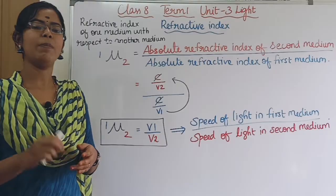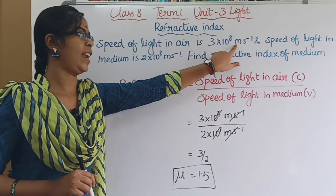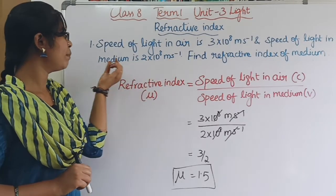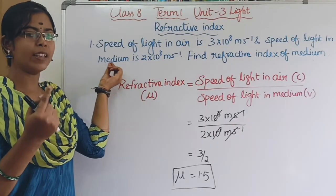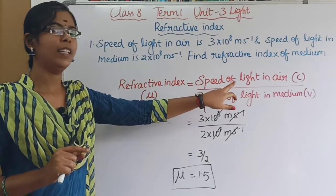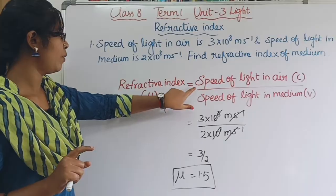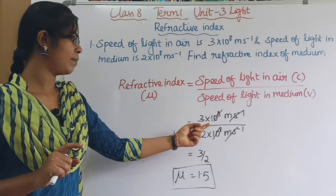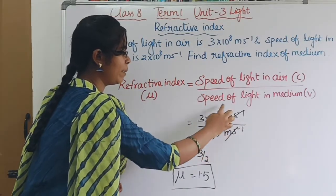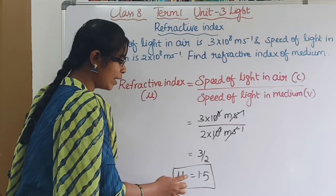Problem 1: The speed of light in air is 3 × 10⁸ m/s and the speed of light in a medium is 2 × 10⁸ m/s. Find the refractive index of the medium. Using the formula mu = c/v: mu equals 3 × 10⁸ divided by 2 × 10⁸. The 10⁸ cancels, leaving 3 by 2. The refractive index is 1.5.